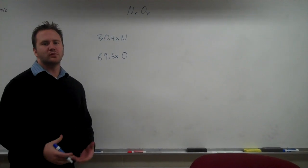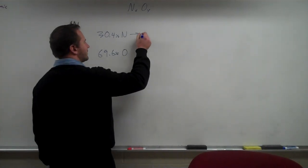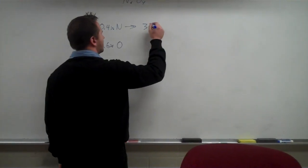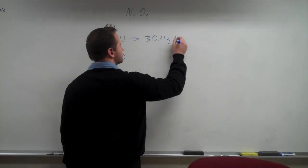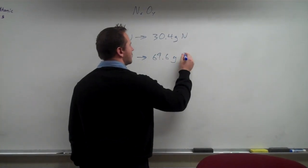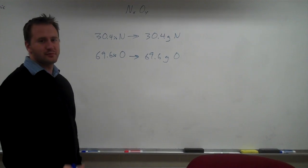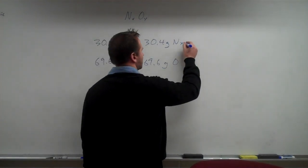Now when we're given percents, what we want to do is assume 100 grams of the sample. So we will just simply convert these percents to grams. Now once we're in grams, we can go to the mole of any substance by dividing by its molar mass.